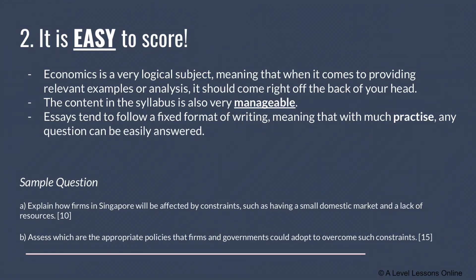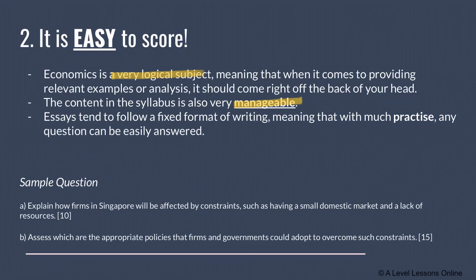Secondly, economics is actually very easy to score. Out of all the humanities subjects, I would say econs is one of the easiest. The reason is that it's a very logical subject — everything makes sense because it relates to what you've already experienced in your 17 or 18 years of life. The H1 and H2 econ syllabus is quite straightforward. It can be conceptually slightly more difficult in places, but overall it's easy to score because concepts come naturally — for example, understanding why there's demand for Nike shoes, through concepts like price inelasticity and consumer brand loyalty.